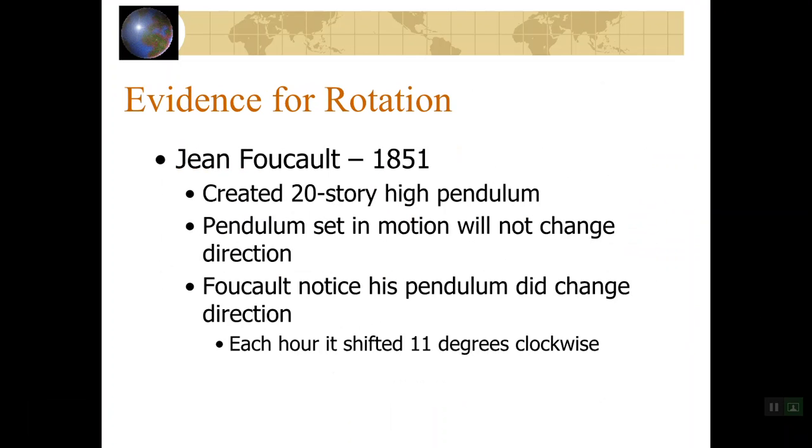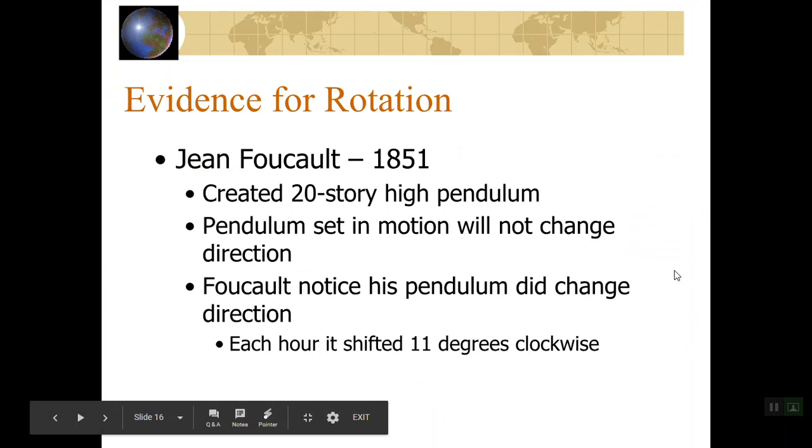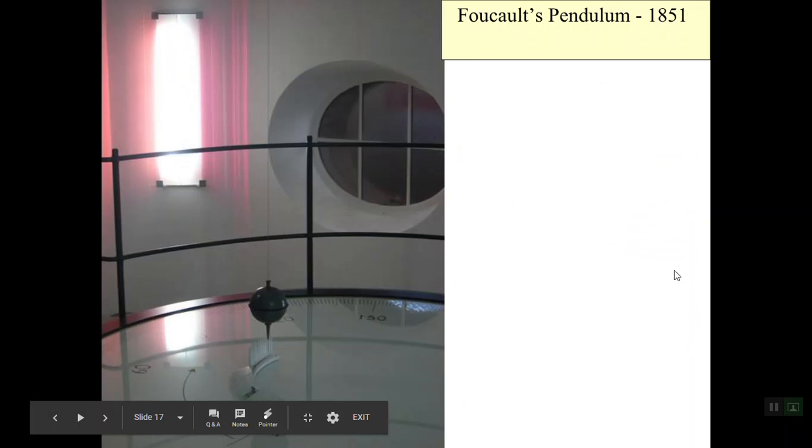Alright. So here you see we have some evidence for rotation. Don't forget the rotation is spinning on its axis. This scientist, John Focault, in 1851, he created a really high, 20-story-high pendulum. And when that pendulum was set in motion, any pendulum, it won't change direction. But he noticed that his did change direction, and it shifted every hour about 11 degrees clockwise. So that was a big piece of evidence for the fact that Earth is rotating. And here's a picture of that here.